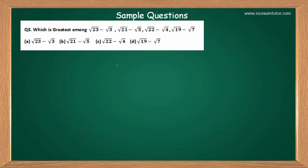Now this question is a bit different because minus is involved instead of plus. The approach and trick remain the same, with just a small variation. Adding the numbers of each root: 23+3=26, 21+5=26, 22+4=26, 19+7=26. Since we get the same number, we can apply this trick.